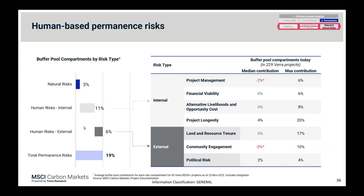Although natural risks are important, on average human-based risks tend to be more significant — for typical projects, two-thirds of permanence risk comes from human factors. Projects with the lowest risk are based in countries with strong rural land use ownership rights, free from land rights disputes, with lengthy legally binding commitments, and located in areas where the project creates lower opportunity costs. Total project permanence buffer contributions can reach 20%, which typically mitigates much of the total risk.